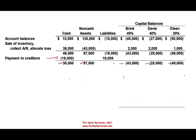Now the question becomes: you are supposed to distribute this $30,000 to the partners, but which partner do you give the money to? They all have credit balances — Brink has $43,000, Olson has $49,000, Davis has $25,000. Do you give it to the largest balance, which is Olson? Do you give it to the lowest, which is Davis? Who do you give the cash to? We're going to have to prepare what's called a worst case scenario.